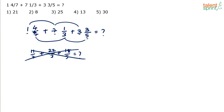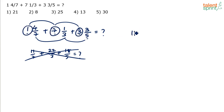So let's find the integer sum first. All three values are being added, so 1 plus 7 is 8, and 8 plus 3 is 11. The integer sum is 11. Now what is the fraction sum?